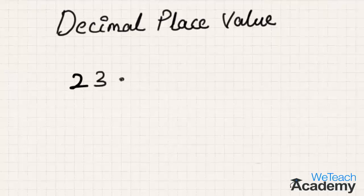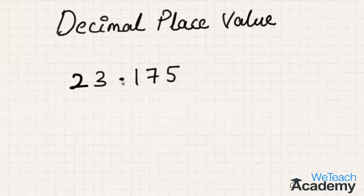Let us consider a decimal number like 23.175. A decimal number consists of two parts: a whole number part and a fractional part, separated by a decimal point. Each digit in this decimal number has its own place value. In the whole number part, 3 is in the units place (ones place).